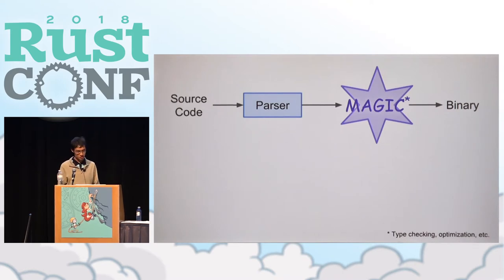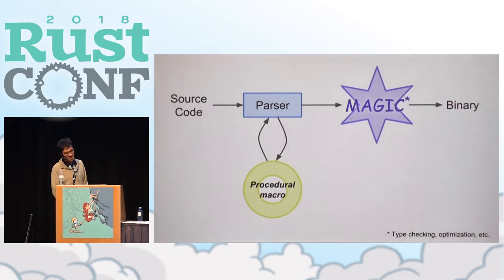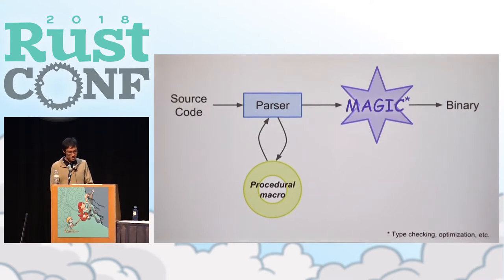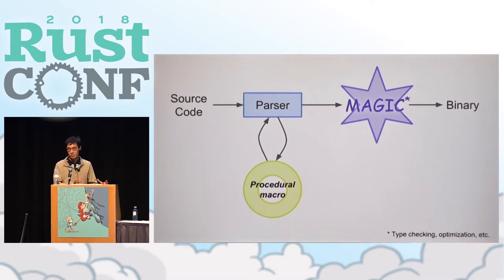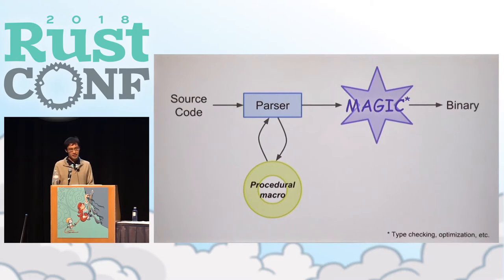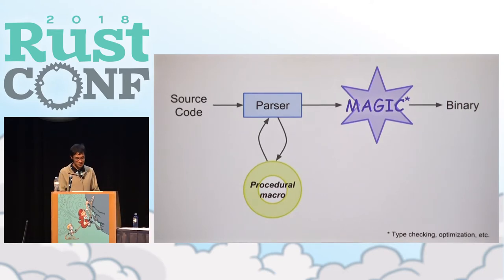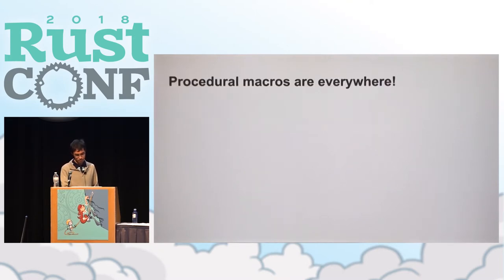Where a procedural macro fits in is inside the parser — there's a bagel there, it's a bagel by the way, not a doughnut. Whenever the parser sees a call to a macro, it takes whatever is within that macro call and hands it verbatim to your procedural macro. Your macro processes it in its own way and hands back generated Rust code to the parser, which understands it as normal Rust. In that sense, a procedural macro maps a custom syntax into Rust code, thereby extending the syntax of the language.